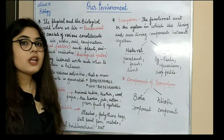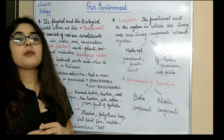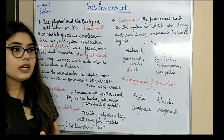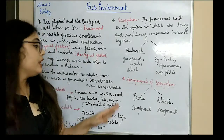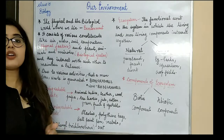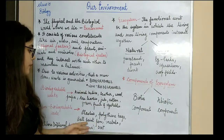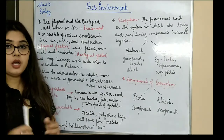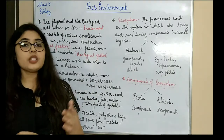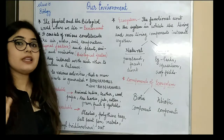Non-biodegradable substances are basically the substances which cannot be converted or decomposed by microorganisms. When microorganisms act on them, nothing happens — they will not be converted into less toxic waste, they remain the same, and the amount of toxicity stays the same. The reason is that microorganisms are highly specific — they act on natural things, but once there is a chemical mixture, they cannot act on it.